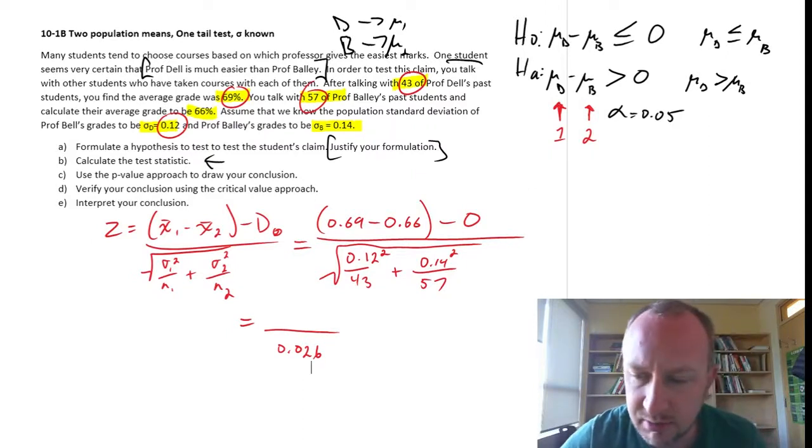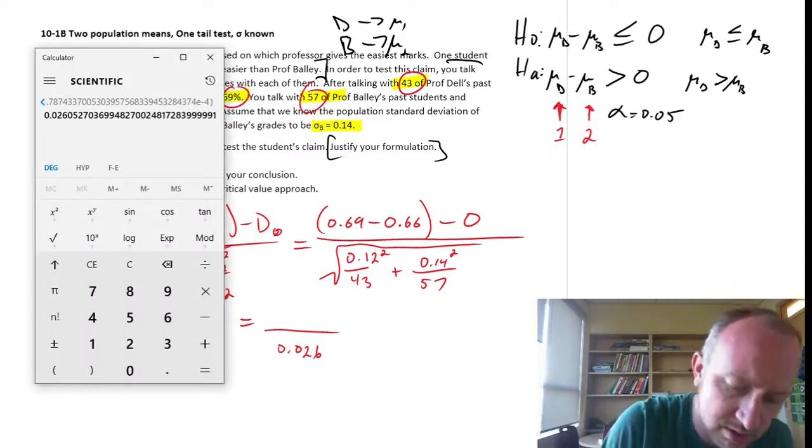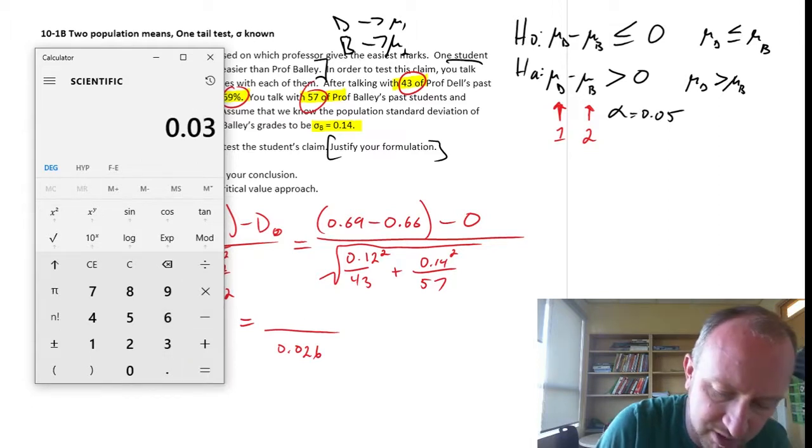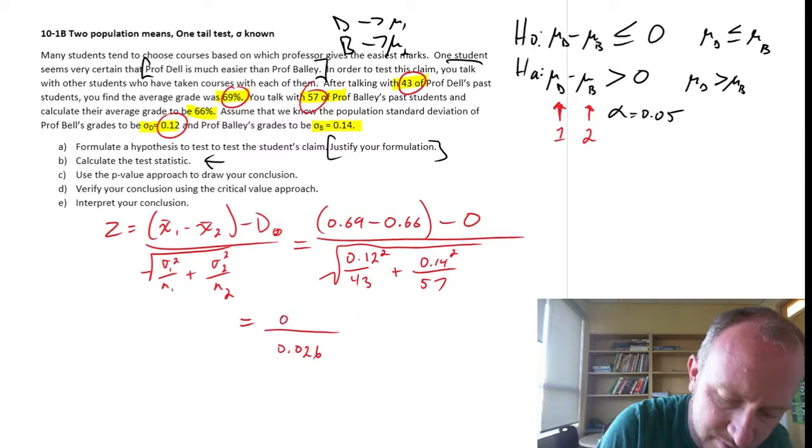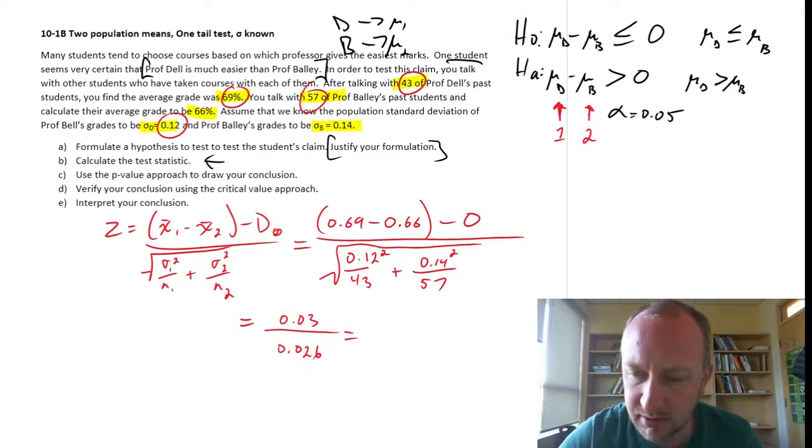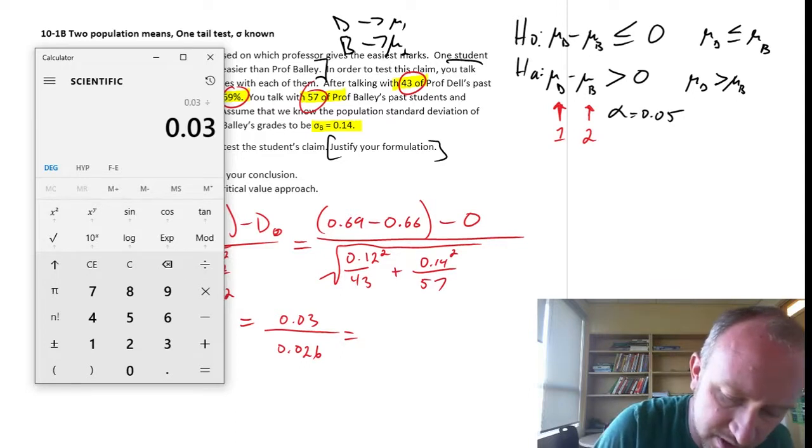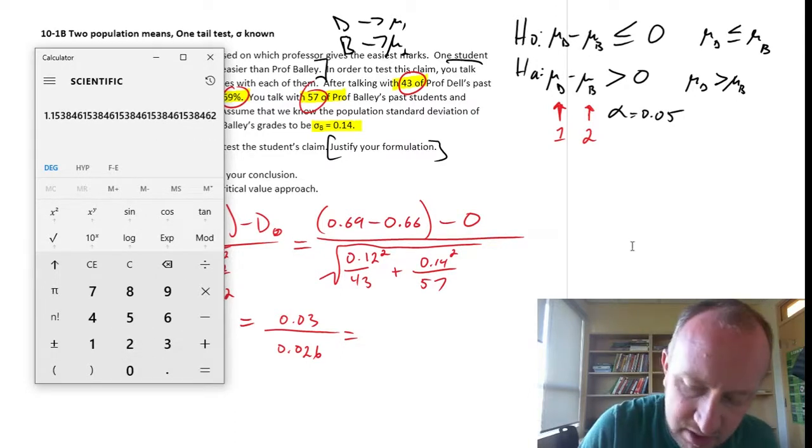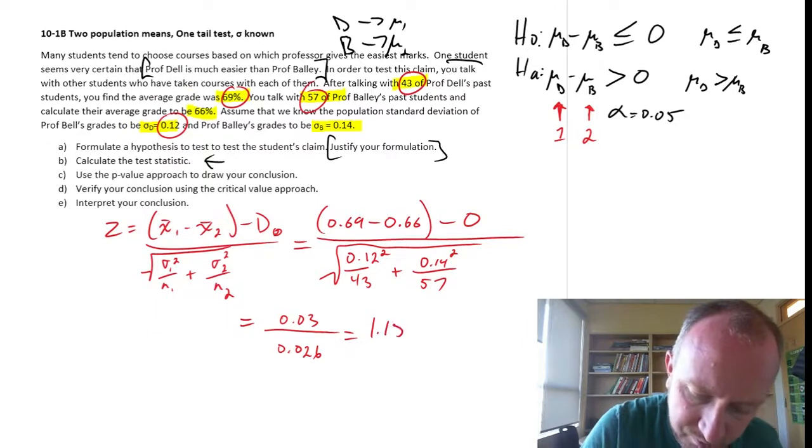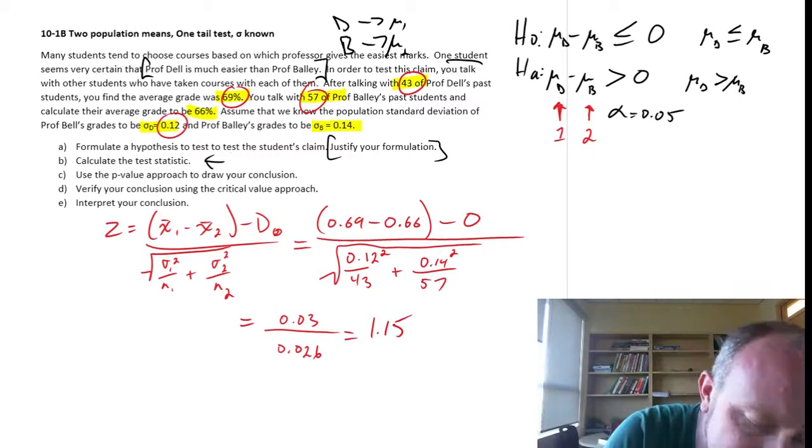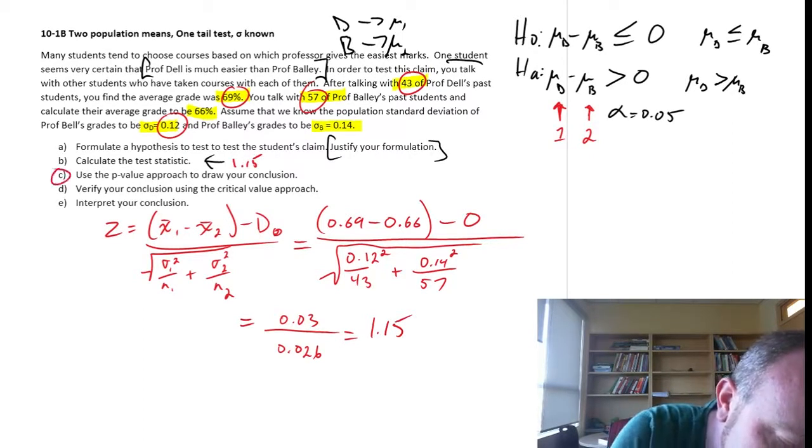So there's 0.12 squared divided by 43 plus 0.14 squared divided by 57 equals square root. And so I have in the denominator 0.026. And our numerator, this is going to be 0.69 minus 0.66, so 0.03. And that's going to come out divided by 0.026, so 1.15. So 1.15 is our final test statistic for part B.